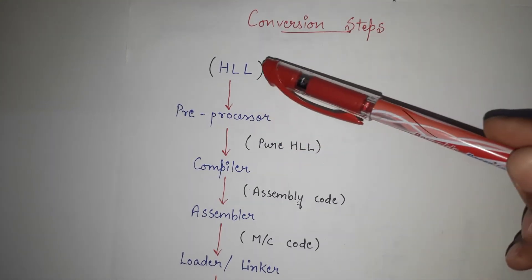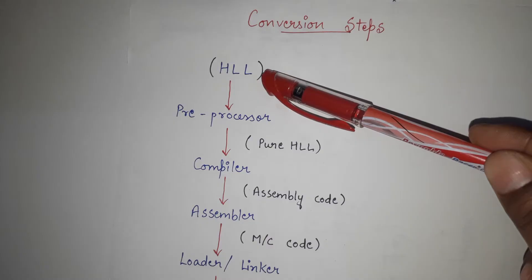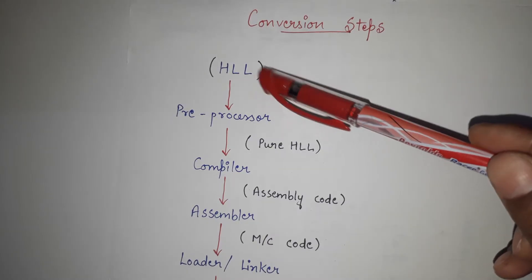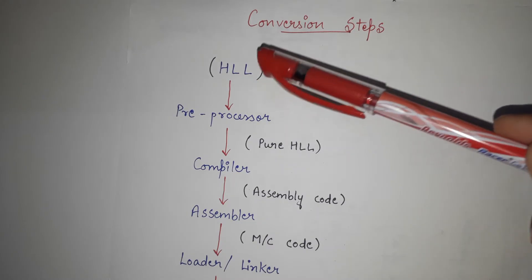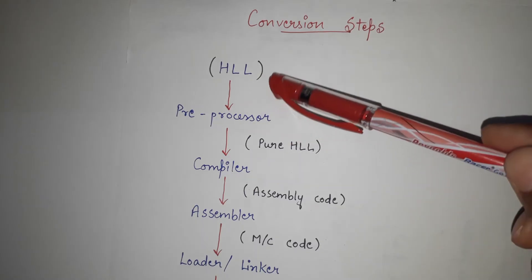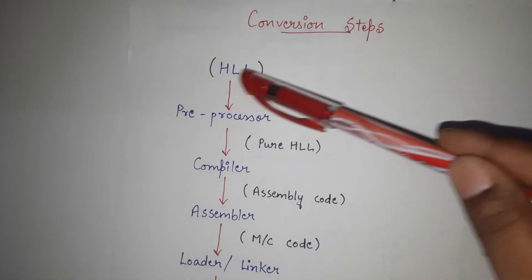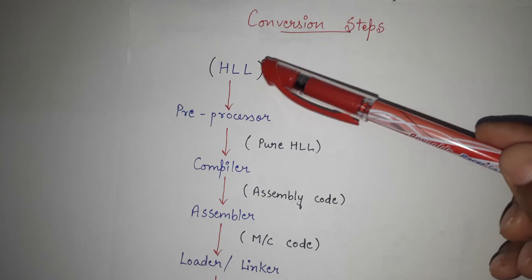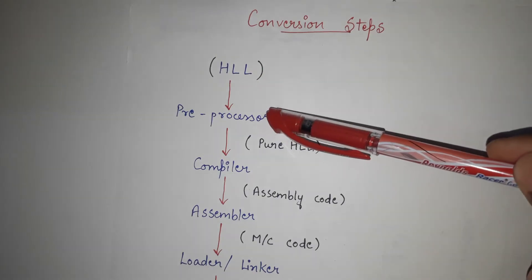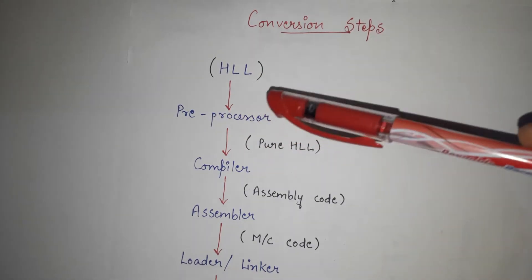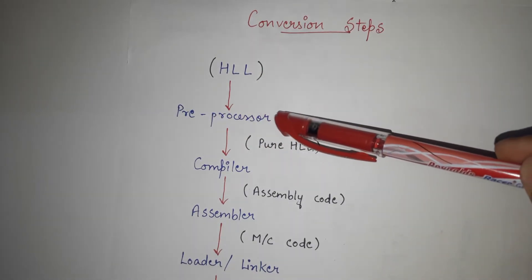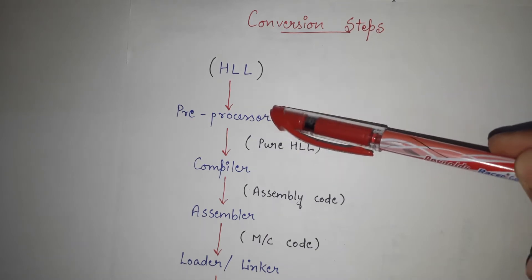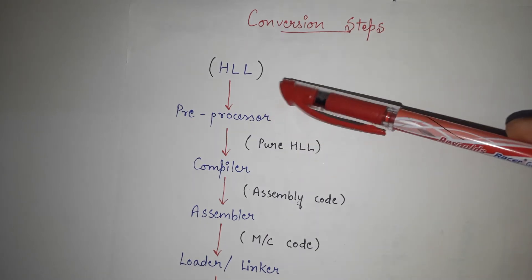First of all, we have the high-level language — any language in which the user or we humans write the program is known as high-level language. Then the pre-processor comes into the picture. As the name itself indicates, pre-processor means anything that is required before processing.